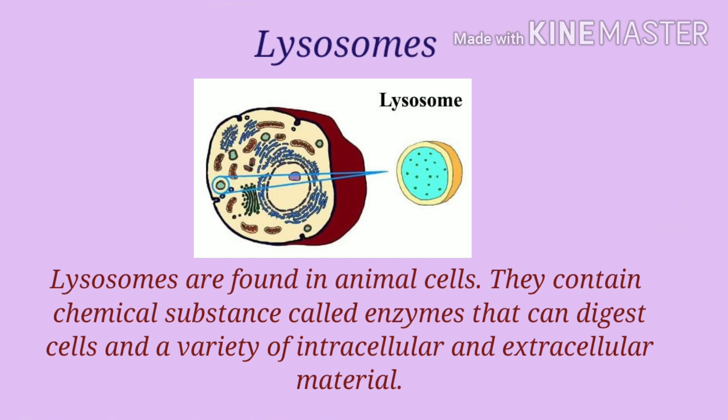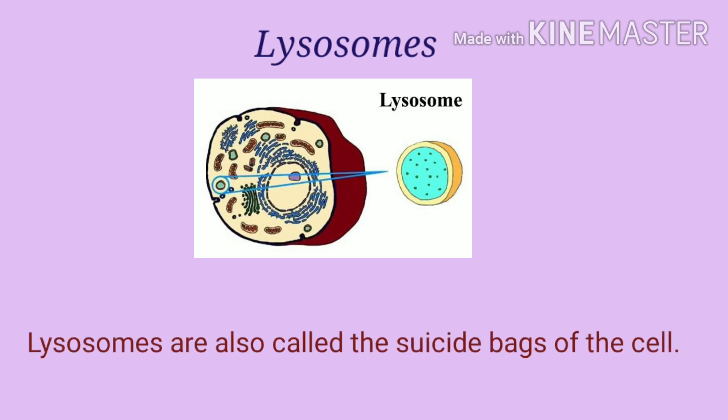Next one is lysosomes. Lysosomes are found in animal cells. They contain chemical substances called enzymes that can digest cells and a variety of intercellular and extracellular material. During times of emergency, they release the enzymes which digest other cell organelles, thus killing the cell.